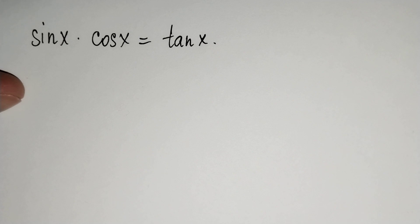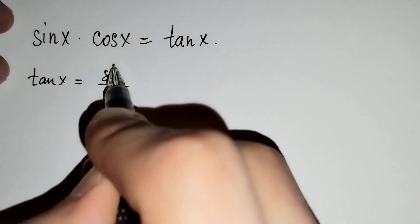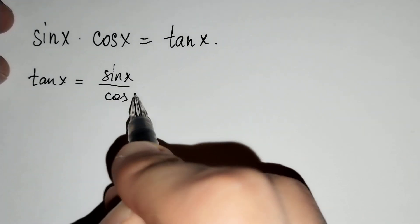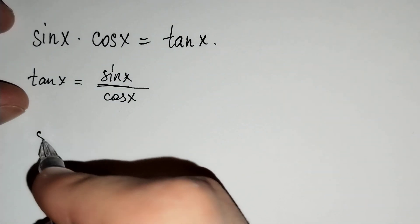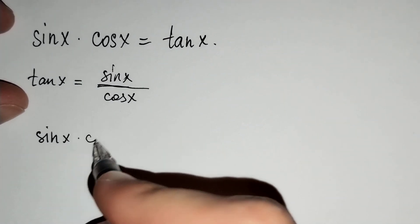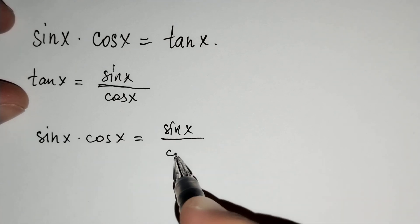Firstly, from the trigonometric identity, we know that tangent x equals sin x over cosine x. Let's substitute this above: sin x times cosine x equals sin x over cosine x.